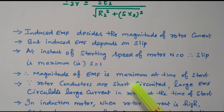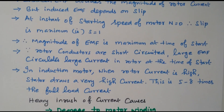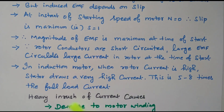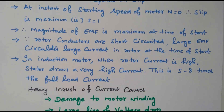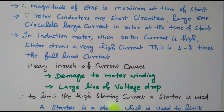The magnitude of the induced EMF is maximum at starting, so the rotor conductors are short-circuited and large EMF circulates large current in the rotor. In an induction motor, when the rotor current is high, the stator draws a very high current — about 5 to 8 times the full load current. Due to this inrush of high current, it may damage the motor winding and cause a large line voltage drop. To limit this high starting current, a starter is used.